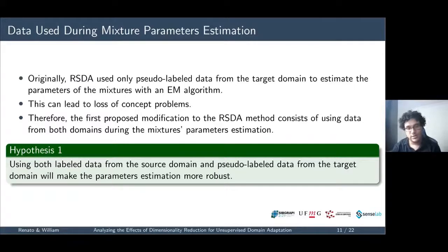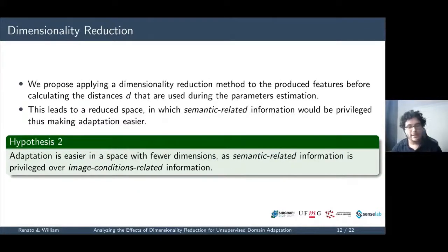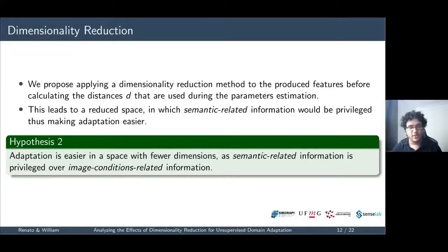We propose two modifications to the RCDA pipeline. In the original RCDA, only pseudolabeled data from the target domain were used in the EM algorithm to estimate mixture parameters. As pseudolabels may be incorrect, especially early in training, this may lead to a loss-of-concept problem. So we propose using both source labeled data and target pseudolabeled data during this estimation, as source ground-truth labels serve as anchors for class definitions, avoiding the loss-of-concept problem.